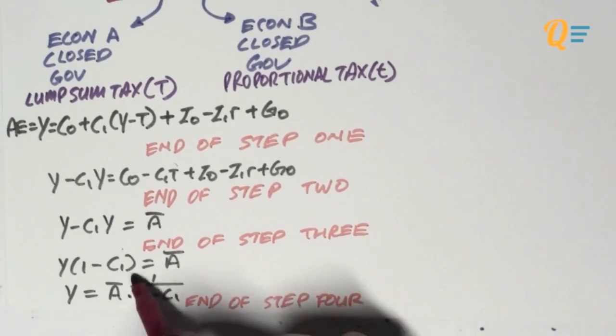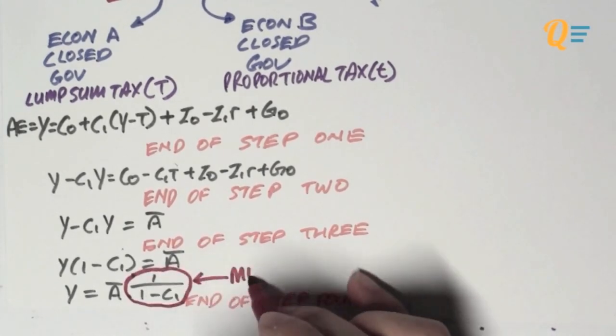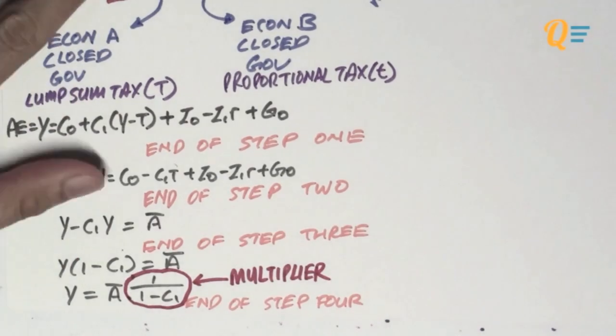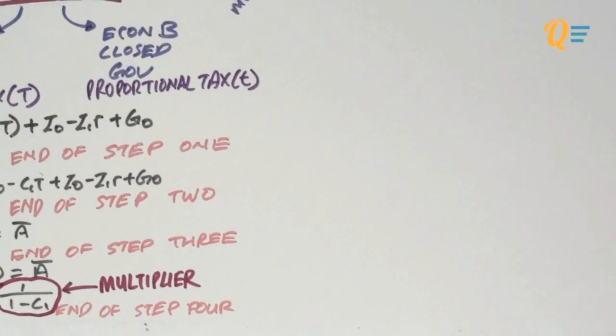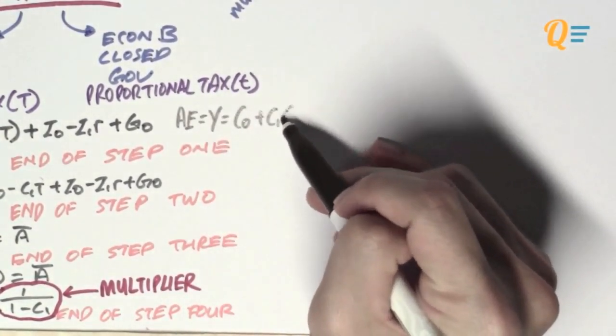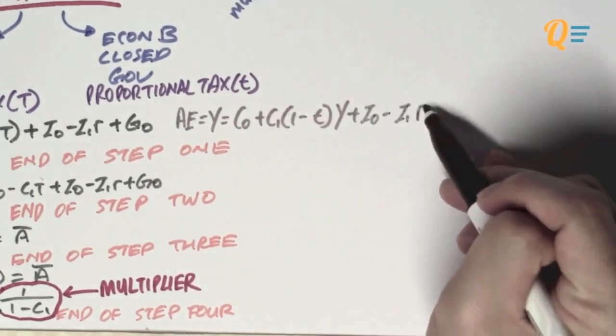And you'll notice that I actually already have the multiplier, which is over here. So, this bunch of terms over here in front of A bar is known as the multiplier. We've seen this when we differentiated the Y with respect to A bar. So, you simply get the thing that is in front of your autonomous expenditure. And that is 1 over 1 minus C1.